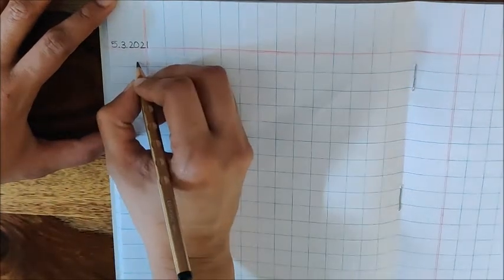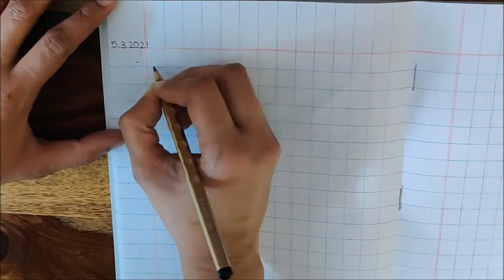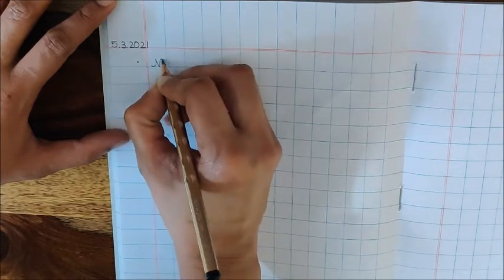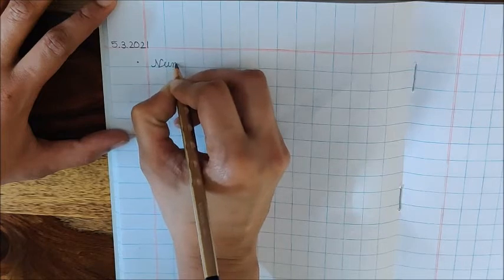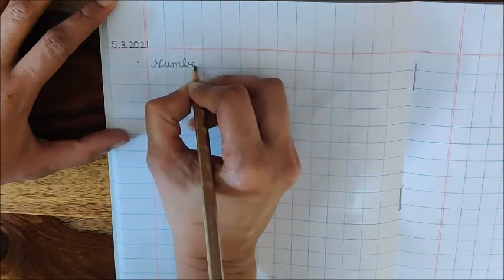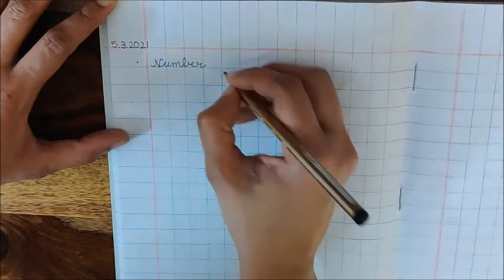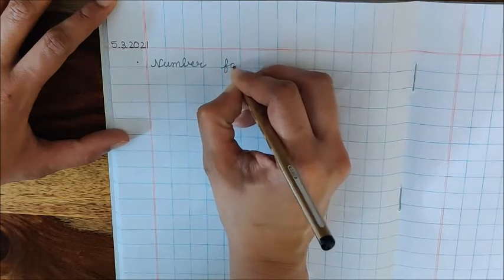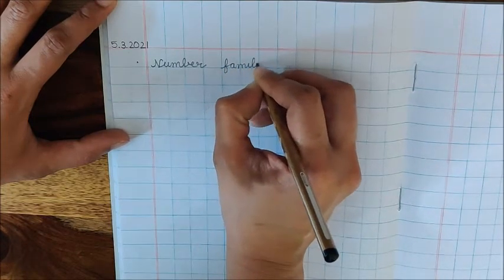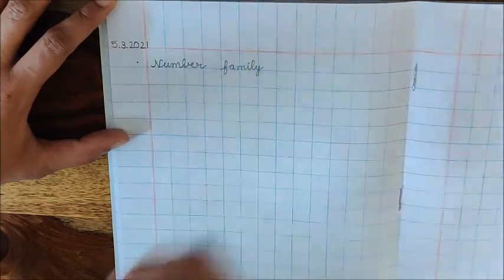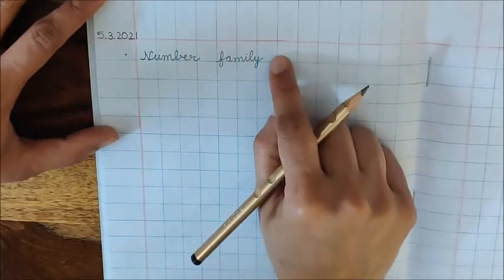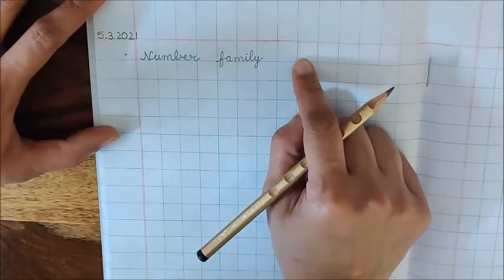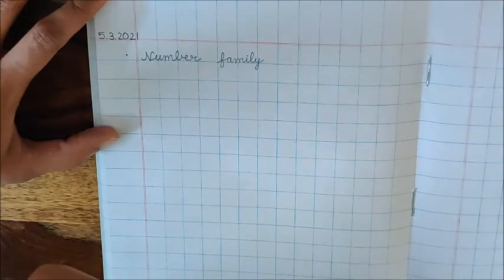Now below the date put a dot and here write down number n-u-m-b-e-r number family f-a-m-i-l-y. Family. We are not going to write any number here because we are doing mixed number family.